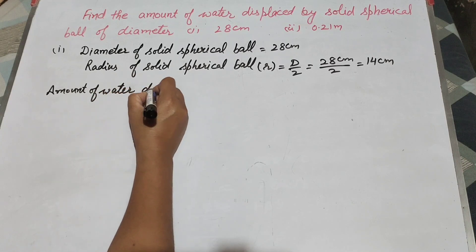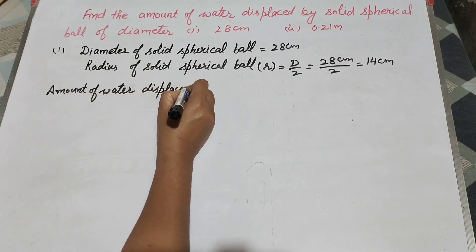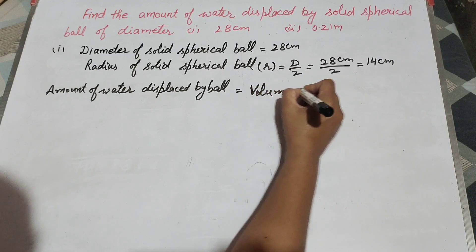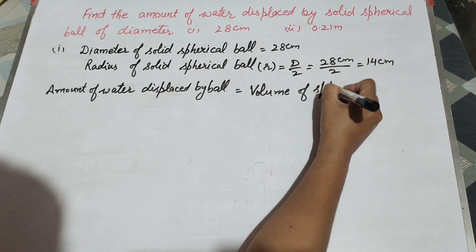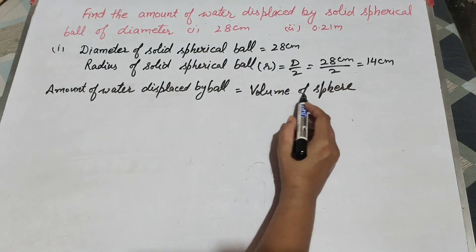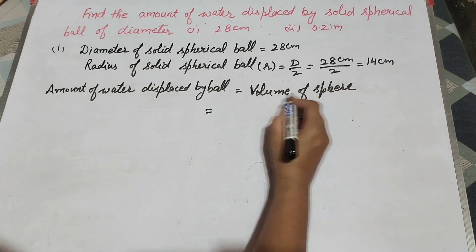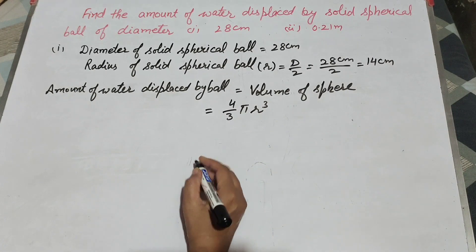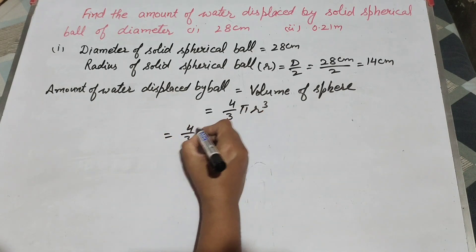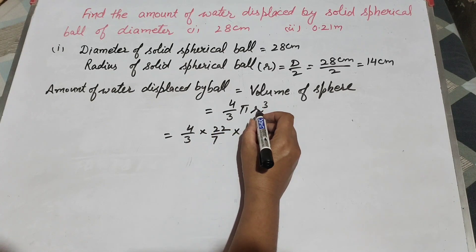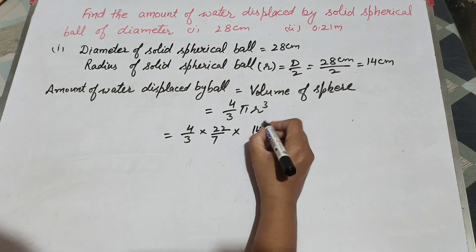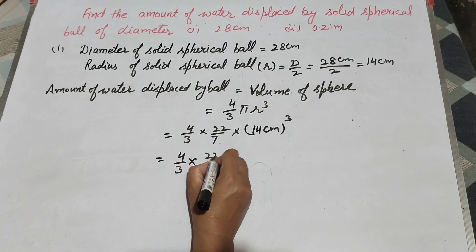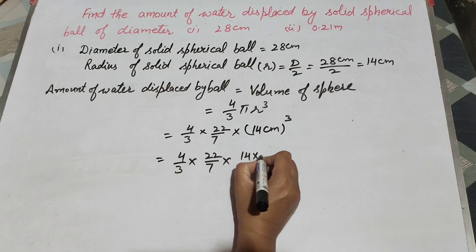Now we find the amount of water displaced by the ball. It is equal to the volume of the sphere, because the ball is spherical. We use the formula to find the volume of a sphere: it is equal to 4 over 3 times π times r cubed. And π is equal to 22 over 7. The radius r is 14 centimeters.